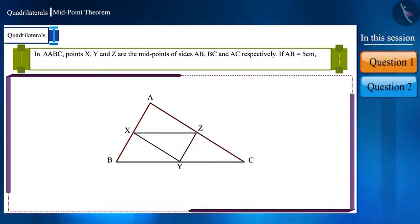If AB is equal to 5cm, AC is equal to 9cm and BC is equal to 11cm, then find the length of sides XY, YZ and XZ and the perimeter of XYZ.